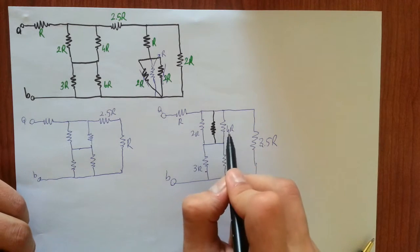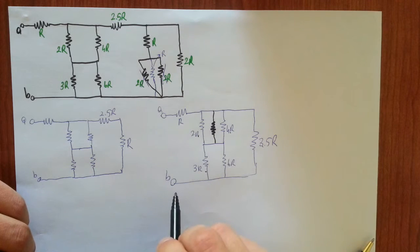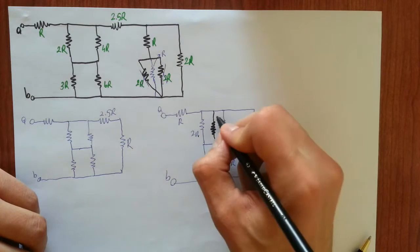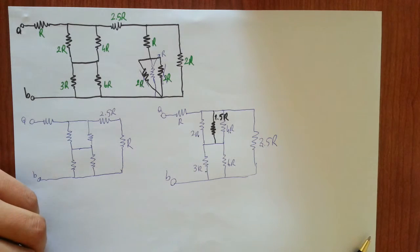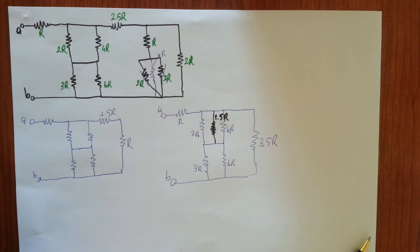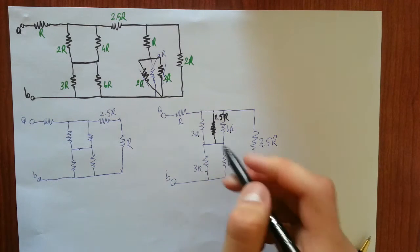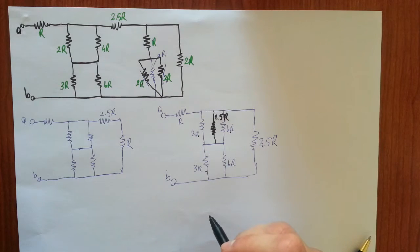With value, when these are in parallel, the equivalent resistor makes 1.5R. You can do the algebra and it gives 1.5R.